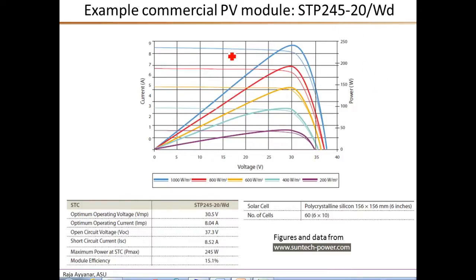Now the current voltage, the IV and the power voltage PV curves are obtained experimentally using an IV curve tracer. And the corresponding plots are shown at the top. So these horizontal lines, those are the IV curves, and these are the power voltage curves.